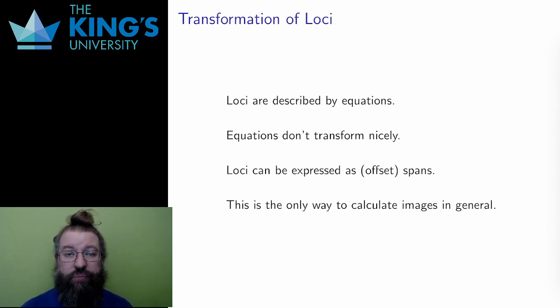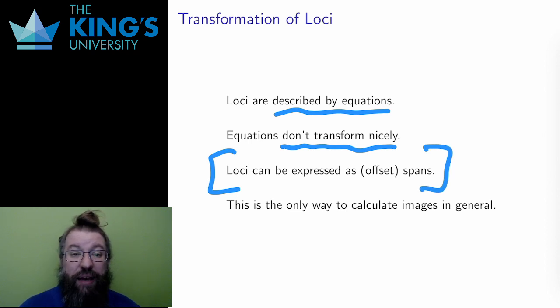What about transformations of loci? Is there another algorithm as nice as this? Well, loci are described by equations instead of vectors, like spans. And it turns out that equations don't transform nicely. There is no way I can just apply the matrix to the equation and get new equations for the image of the locus. So, unfortunately, there isn't a direct method here. In fact, the only method is just to use spans. A locus can be written as an offset span. These are both affine subspaces. A locus and an offset span are two ways to describe the same thing. I understand the image of offset spans well, so to find the image of a locus under a transformation, I have to do the hard work to write it as an offset span and then apply the matrix to that offset span.